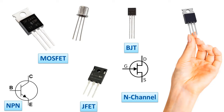In this way, we can reach information about circuit elements whose properties we do not know by looking at their datasheet information, and choose the appropriate circuit element for the circuit we will make with a little research. Apart from these, there are many different circuit elements similar to the transistor, and I have tried to show the most used ones here. I hope it was helpful. Hope to see you in the next video. Goodbye!